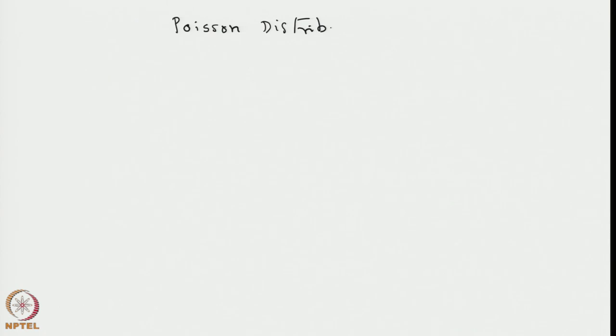We next move over to another discrete distribution known as Poisson distribution. Poisson distribution occurs predominantly in counting statistics and provides very important methodology for assessing risks, for example due to infections. It stands on its own footing in many disciplines, and we dwell at some length on this distribution because of its applications in various contexts.